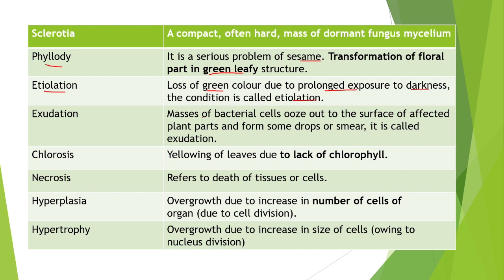Next is exudation: the masses of bacterial cells ooze out to the surface of affected plant parts and form drops and smears. This is called exudation — when bacteria infest a plant surface, they release some liquid-type drops, and this is called exudation.